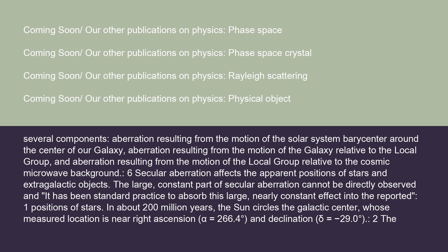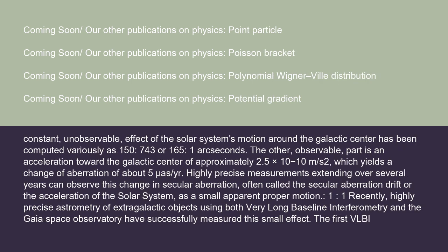In about 200 million years, the Sun circles the galactic center, whose measured location is near right ascension α = 266.4° and declination δ = −29.0°. The constant, unobservable effect of the solar system's motion around the galactic center has been computed variously as 150, 743, or 165 arcseconds. The observable part is an acceleration toward the galactic center of approximately 2.5 × 10⁻¹⁰ m/s², which yields a change of aberration of about 5 arcseconds/year. Highly precise measurements extending over several years can observe this change in secular aberration, often called the secular aberration drift or the acceleration of the solar system, as a small apparent proper motion.